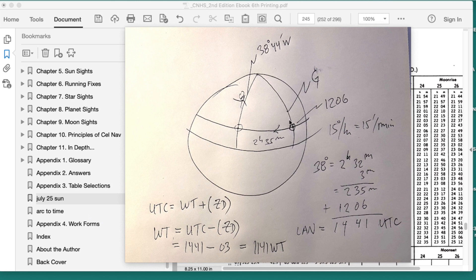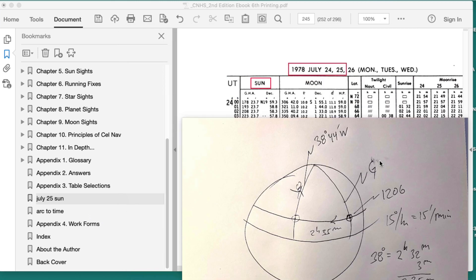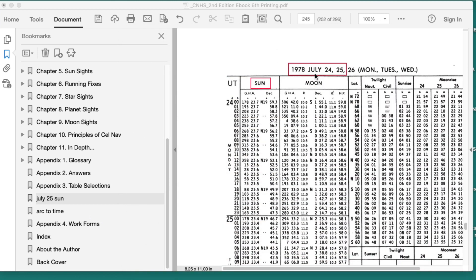The first thing we have to do is look up in the nautical almanac. This is standard procedure. We look up in the nautical almanac when the sun is here on this particular day.